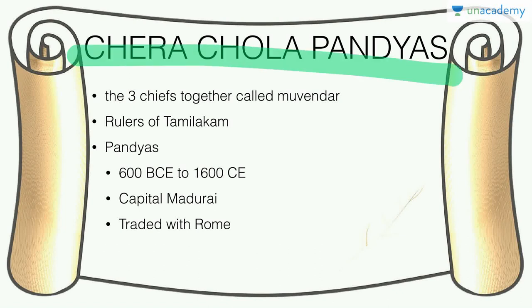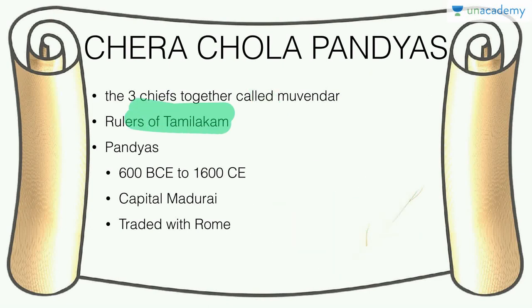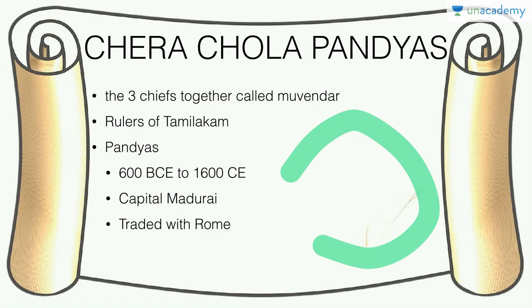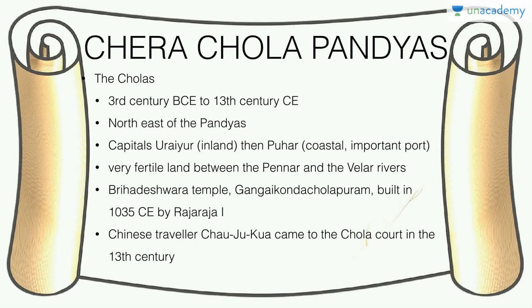The three southern chiefs — the Cheras, Cholas, and Pandyas — together were called Muvendra and ruled the ancient country of Tamilakam, covering what we call South India today: Andhra, Kerala, Tamil Nadu, and parts of Karnataka. The Pandyas ruled for 1,100 years from 600 BCE to 1600 CE and their capital was Madurai. They traded with Rome.